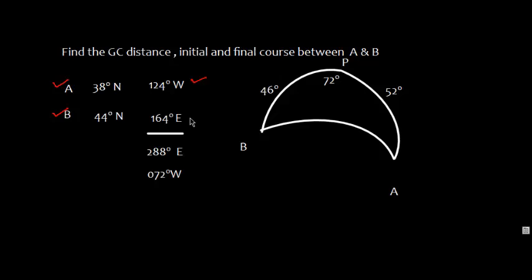First of all, from here this is 38 degrees north and then you are going to go to 44 degrees north, so the direction is towards north. Similarly, this is from west and then you are going to go to east, so the direction is east. We'll add here 124 plus 164, which will give me 288.